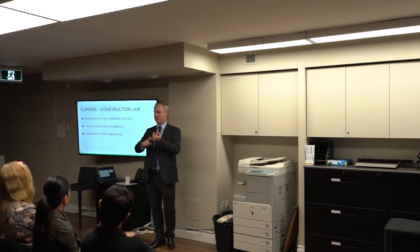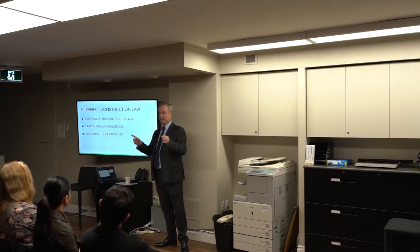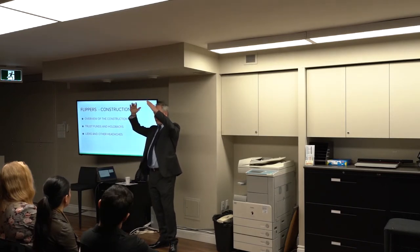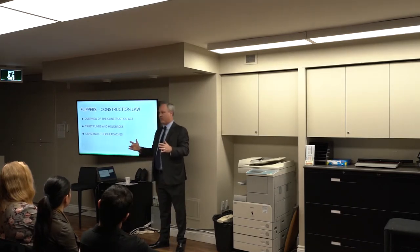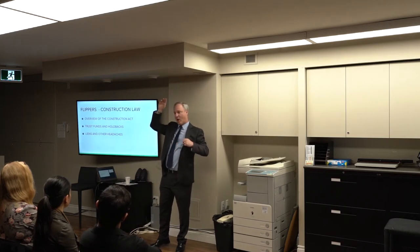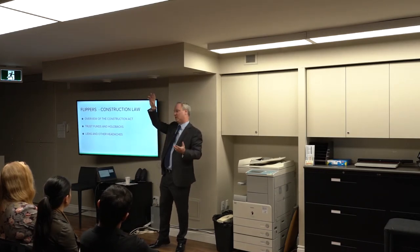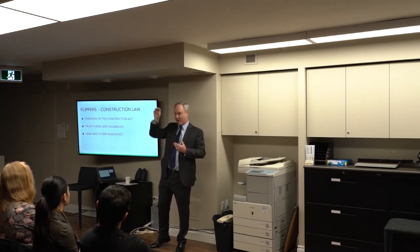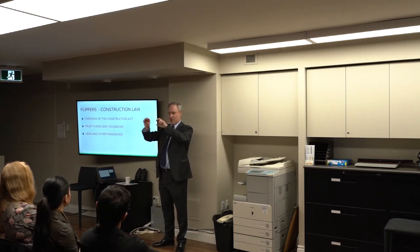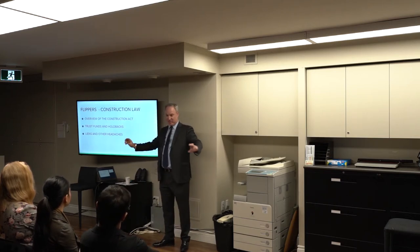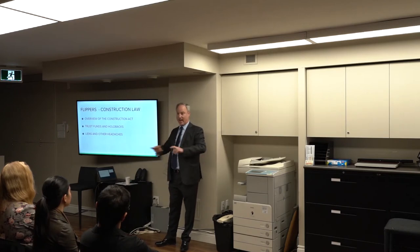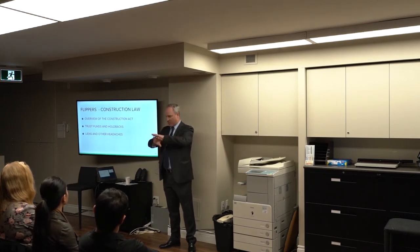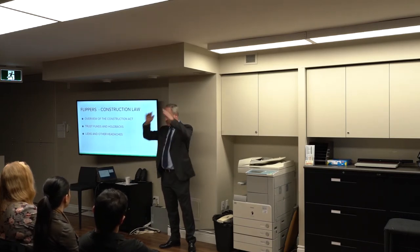A lot of people here want to build, flip, and be developers, so this is important stuff. Think of the construction process as a pyramid. At the top you have a lender — maybe the owner or a bank. Then you have an owner, then a general contractor who hires subcontractors, who hire more subs, and each level gets wider all the way down to the individual trades. The owner's at the top and there are lots of smaller entities further down — that's why it looks like a pyramid.